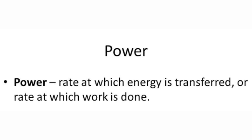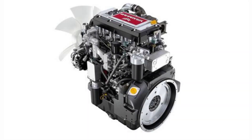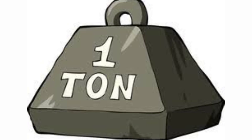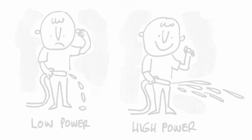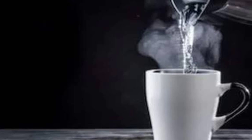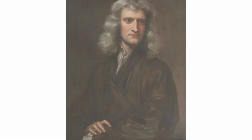What is power? Power is a rate at which work is done. A high-powered engine is one that can move a great deal of weight very quickly. Power is also the rate at which energy is transferred — for example, a large amount of electric power might be needed to heat a large quantity of water.